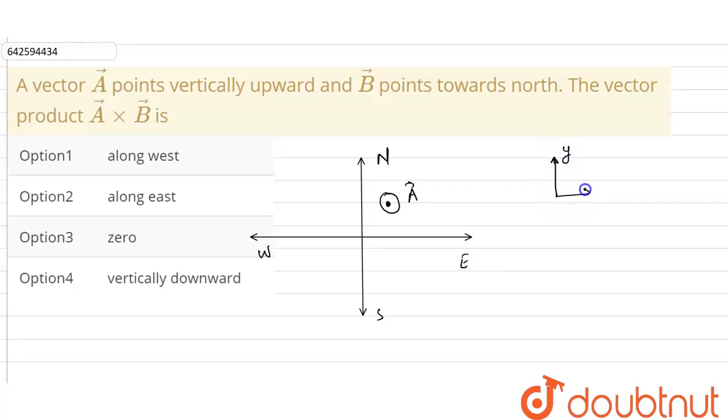The unit vector along x is i cap, along y is j cap, and perpendicular to the plane is k cap. Since our A vector is perpendicular to the plane, that is vertically upward, so it will be k cap.